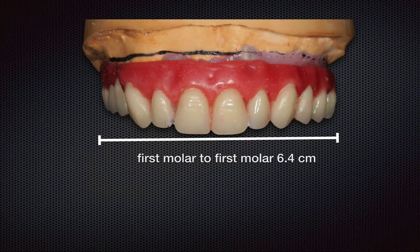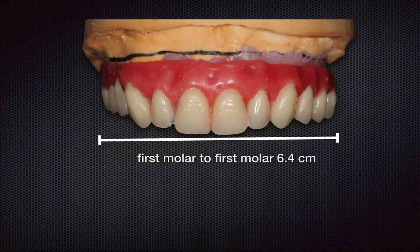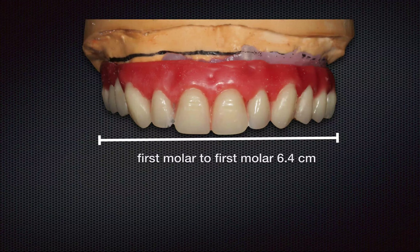According to the information, technicians arrange teeth with the measured width in mind. In this case, it is from right first molar buccal surface to left first molar buccal surface, which is 6.4cm. This ensures that the denture setup has an ideal buccal corridor matching her smile.